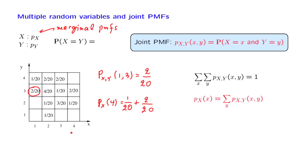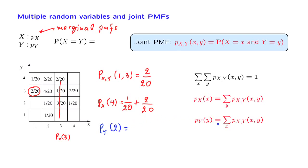So to find, say, p_X(3), we need to add the entries in that column. Similarly, we can find the PMF of the random variable Y. For example, the probability that Y takes on the value 2 is found by looking at the probabilities of all pairs associated with that specific Y and adding over all X values. We fix Y equal to 2 and add over all pairs in that row, so in this example it would be 1 over 20 plus 3 over 20 plus 1 over 20.